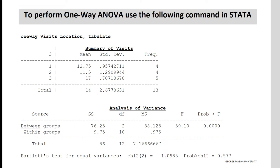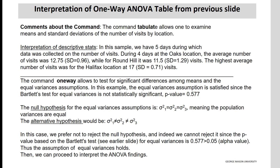To perform one-way ANOVA in STATA, use the command one-way, then enter the dependent continuous variable — in our case, visits — then the categorical independent variable, location, and the command tabulate after the comma. The tabulate command allows one to examine means and standard deviations of the number of visits by location. In this sample, we have five days during which data was collected. The average number of visits for Oaks was 12.75 with a standard deviation of 0.96, for Round Hill it was 11.5 with a standard deviation of 1.29, and the highest average was for Halifax at 17 with a standard deviation of 0.71.